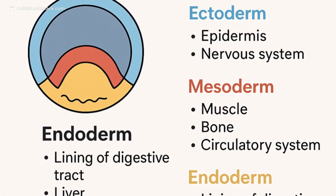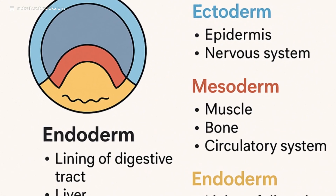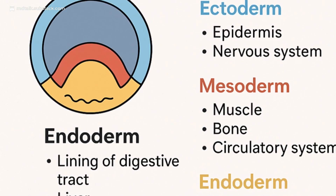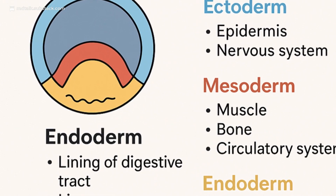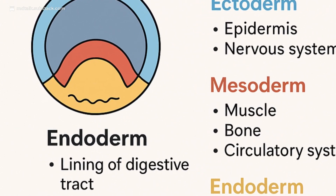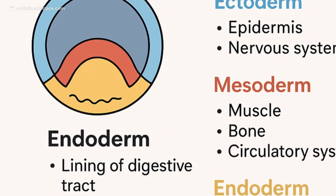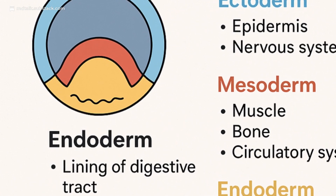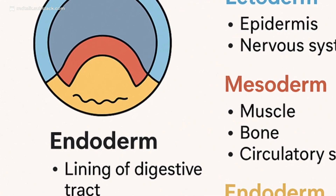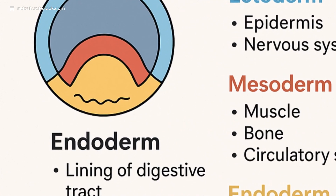Around week three, the embryo transforms. The primitive streak forms. Cells dive inward. Ectoderm, mesoderm, and endoderm emerge, defining body axes and organ precursors.